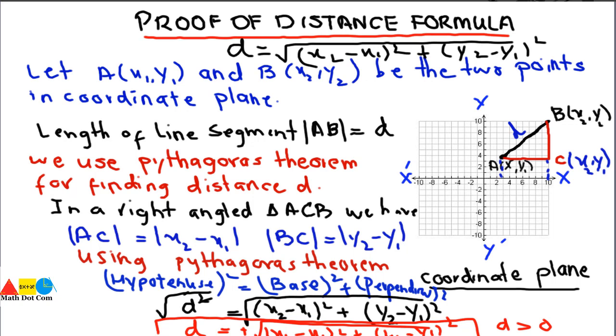This was all about how you can derive the distance formula, which is used to find the distance between two points in a coordinate plane. Thank you.